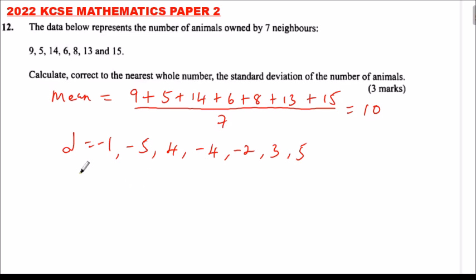We square the deviations. The deviations squared is equal to, so this will be 1, 25, we have 16, we have 16, we have 4, we have 9 and 25.